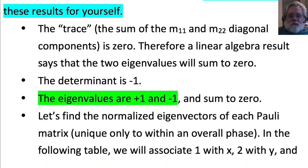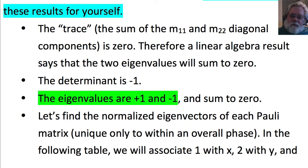We need to discuss the normalized eigenvectors of each Pauli matrix, but I'm not going to show the procedure for solving for them. If you already know how to do this, great; if not, just trust me, or you can verify that given vectors are eigenvectors without solving for them — verifying is not difficult. I'm going to give you the normalized eigenvectors of each Pauli matrix, unique only to within an overall phase, which doesn't affect the physics.